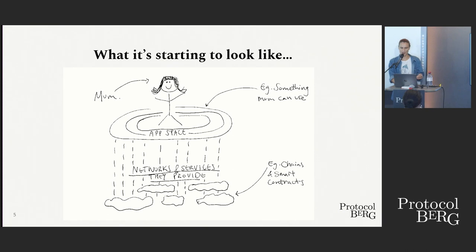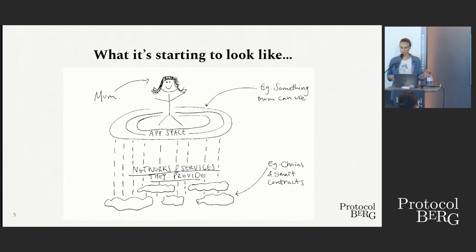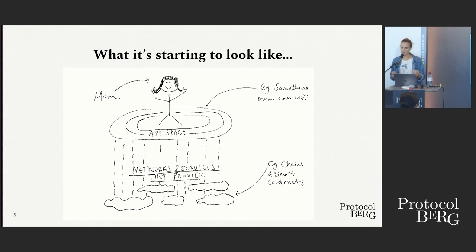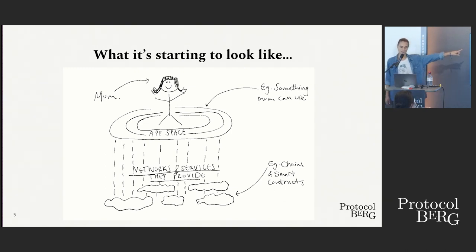Programmability really is a superpower in which we have now arrived at a place where we have a lot more freedom as developers to build a prosperous application space. What we're looking at is a space upon which user-facing apps can be deployed. What it's starting to look like is that apps are powered by multiple services offered by multiple networks. We'll be referring to 'mom' as our prototypical end user throughout this workshop.